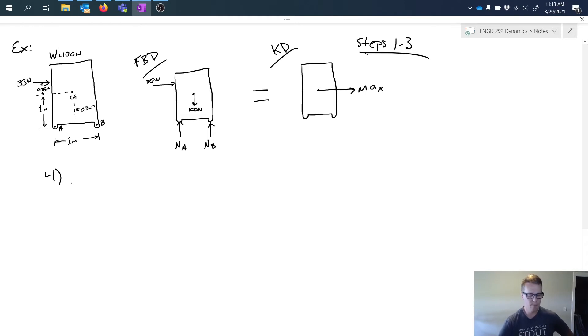So if I go to step four, I want to identify how many unknowns I have. Well, we can see these basically right on our diagrams. We have Na and Nb, mass we can get from the weight, so our acceleration. So we end up with three unknowns that we're going to need to solve for.